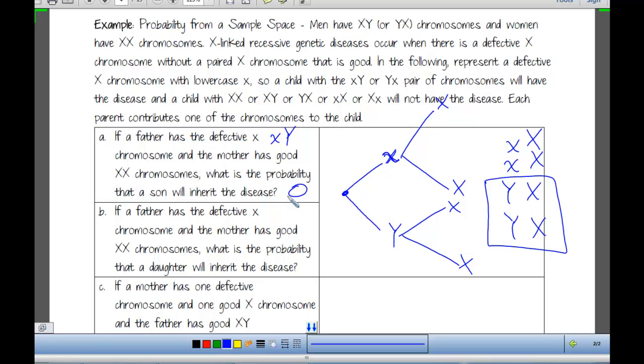You don't like my biology? Well, if it wasn't so long ago. That's been about 20 years for me. But anyway, if a father has the defective, same situation, but what is the probability that a daughter will inherit the disease? That's what? Still zero, right? These are the daughters, but both of them have capital X, which is good. They'll carry the trait, but they don't have the disease. So we'll say zero for them.